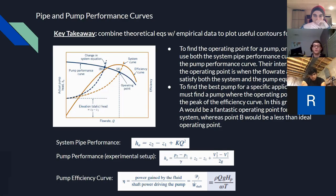To find the operating point for a pump, we must find the intersection of the pump performance curve and the pipe system performance curve. This is the operating point, as at this point both the system and the pump will give the same head rise for a specific flow rate. Once this operating point is found, to find the best pump for a specific flow rate, we must find the pump where the operating point is near the peak of the efficiency curve.